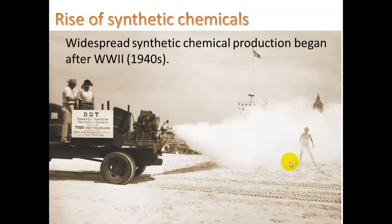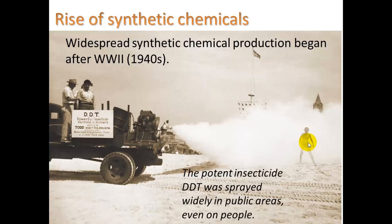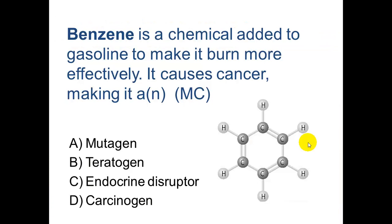Here's a picture I first saw in grad school — people spraying DDT all over bathers at Long Island beaches. The rise of DDT happened after World War 2, which we read about with Rachel Carson. Here's benzene: a chemical added to gasoline to make it burn more effectively. It causes cancer, but we still use it after a cost-benefit analysis determined it is better to use it than not.